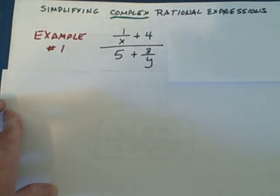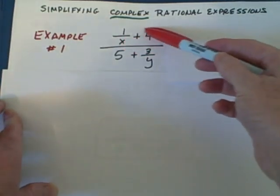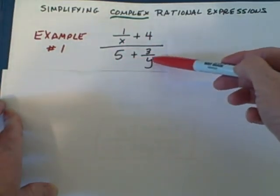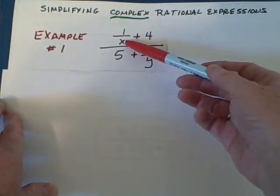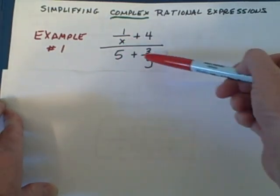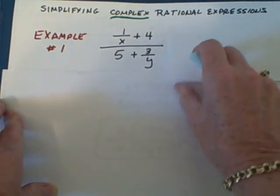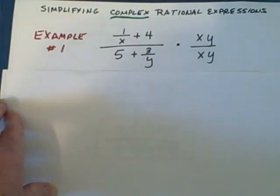What we're going to do is we're going to multiply by the common denominator for this numerator and the common denominator for this. The only denominator here is x and in the bottom one is y. So we're simply going to be multiplying by xy times xy.